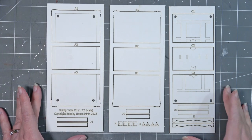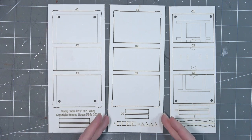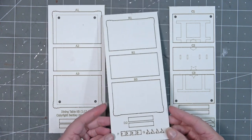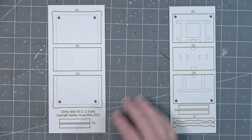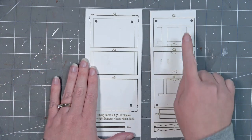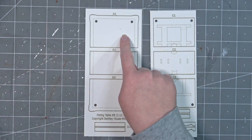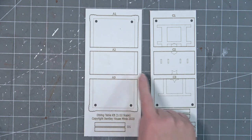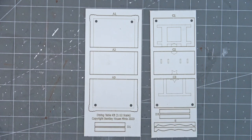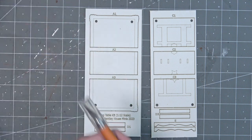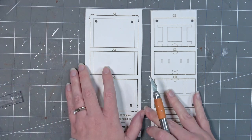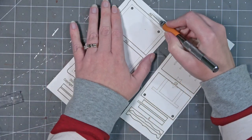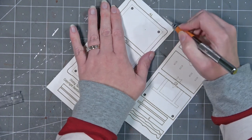To start off you will have three pieces of mat board for your 1:12 scale table. Begin by removing the B piece and set it to the side. You're going to start with all the pieces marked with a C and all the pieces marked with an A. You're going to need a sharp craft knife to cut through the tabs holding them into the mat board sheets.